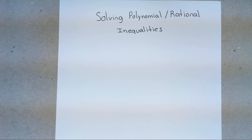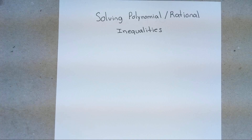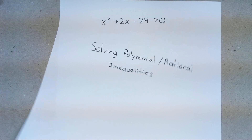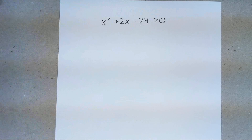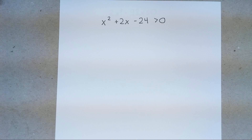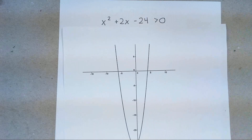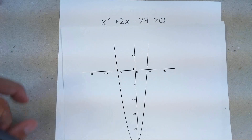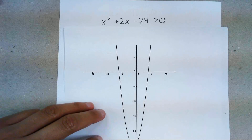Hi everyone. In this video we're going to be working with how to solve polynomial and rational inequalities, and what that looks like is a problem like this. Given a problem where it's a polynomial or a rational function, they're always going to ask you to figure out when it's greater than zero or when it's less than zero. Now what this means in respect to a graph — this picture we have right here — is this graph.